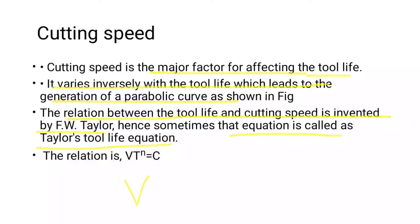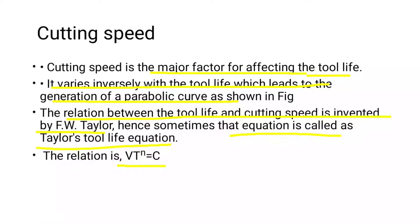Taylor's equation is VT^n = C, where V is cutting speed in meters per minute, T (capital) is tool life in minutes, n (small) is the tool life index which depends on the tool material, and C is a constant.